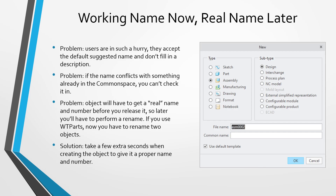Same with assemblies. Then when someone later on uses the same default name that's suggested to them and they try to check into the common space, they are not going to be able to do it because of a name conflict. Later on you're going to have to give it a real name and number, especially when you want to release it to manufacturing — so you'll have to do a rename operation. And if you're using WTParts in addition to CAD documents, now you have two different objects that you have to rename. Do yourself a favor and when you're creating a new part, assembly, or drawing, give it the correct file name and common name.